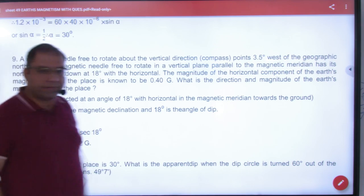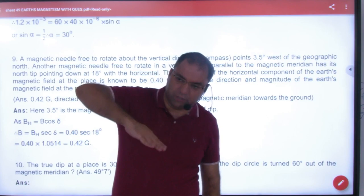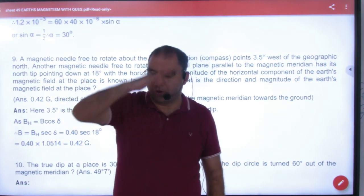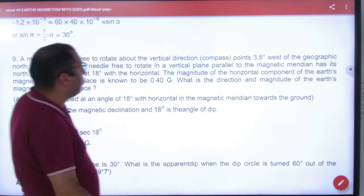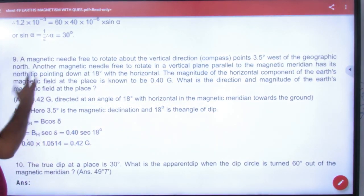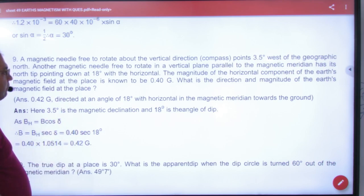When this statement says 18 degrees with horizontal, that is the angle of dip. With horizontal, that's the angle of dip. So he is saying the magnetic needle free to rotate in vertical direction points 3.5 degrees west of geographic north.